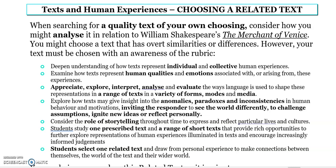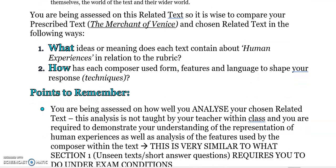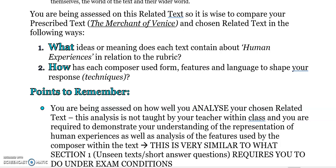When you're searching for a quality text, it's really important that you're able to connect it somehow to our prescribed text, which is The Merchant of Venice. You might be looking for elements where there are similarities — where you can draw some commentary on similar ideas, similar experiences, or even similar language — or alternatively differences, where there's some striking opportunity for you to explore the differences in the two texts side by side. You've got your rubric there, and really important is to compare your prescribed text and related text by that two-step process, which you should already be aware of from what we've looked at for Section 1.